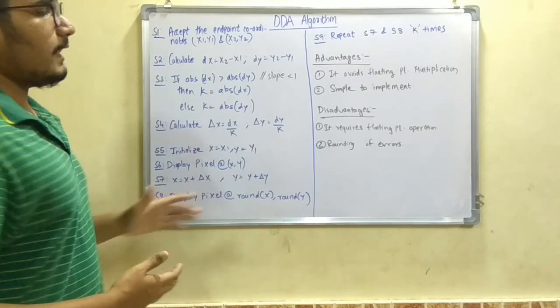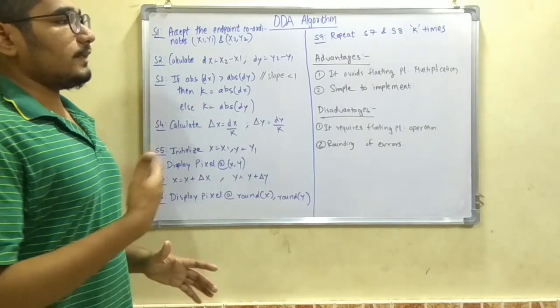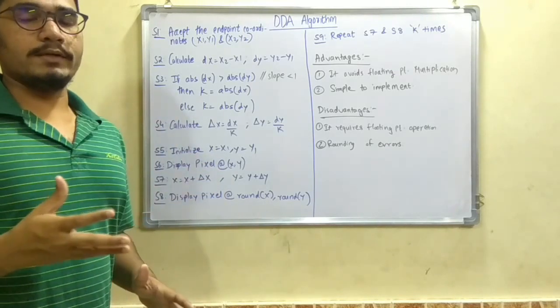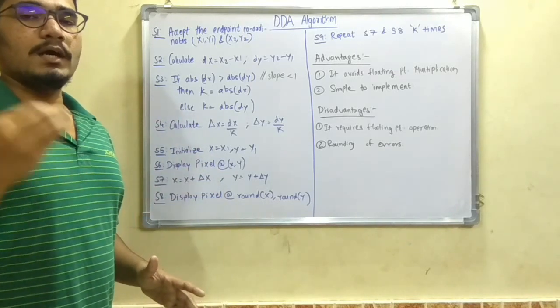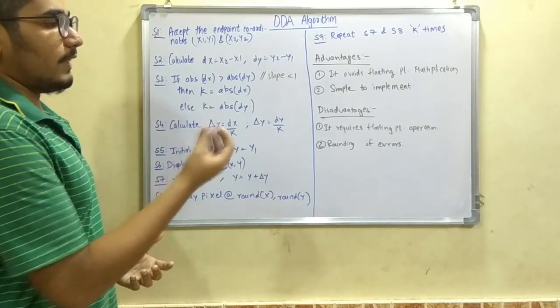And the disadvantages of this is that it requires floating point operation. Like you cannot avoid those operations, but addition is required, so addition is a floating point. While you calculate the output, it can be in the floating point values.